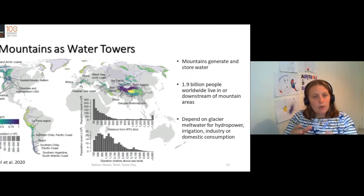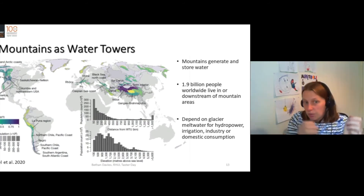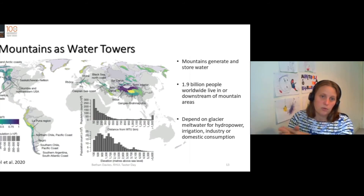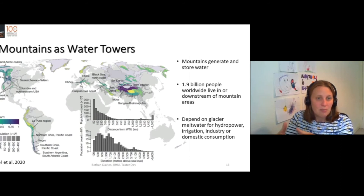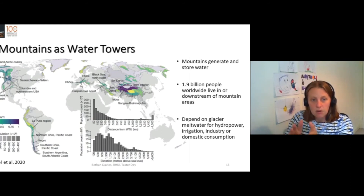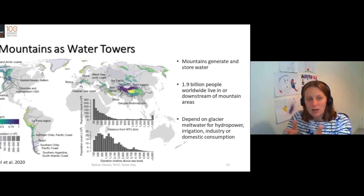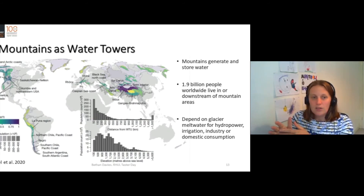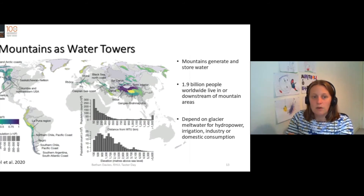The water tower index is a function of the supply of water and the demand for water. If the supply and demand are about equal, and it's very important, then it has a very high water tower index. It's all normalized to one — every single water tower has been ranked from zero to one. At zero, there is probably not much supply or not much demand, so it's not that important. At one, there is a lot of supply and a lot of demand, and it's therefore very important.